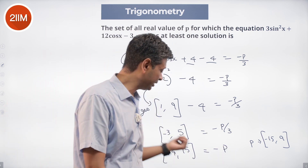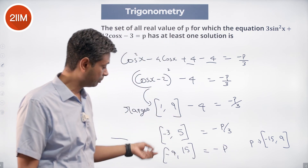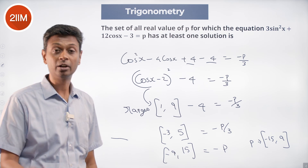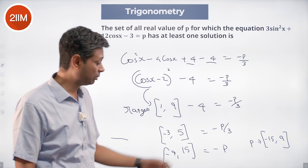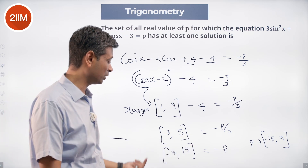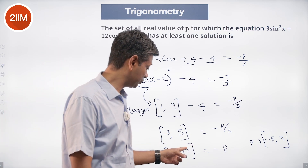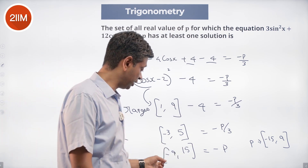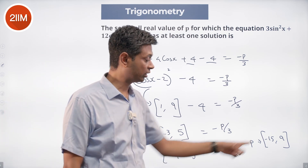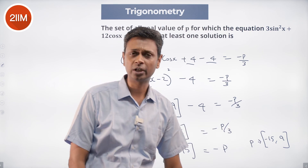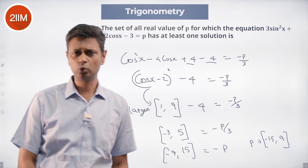So minus p ranges from -9 to 15. Multiplying by -1, p ranges from -15 to 9. Beautiful question.